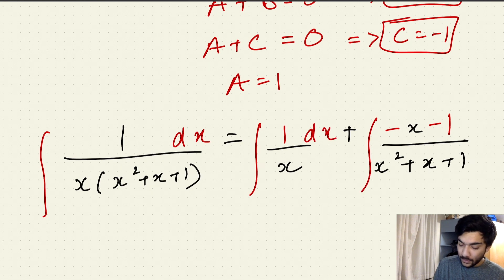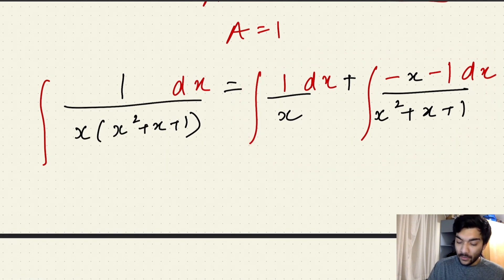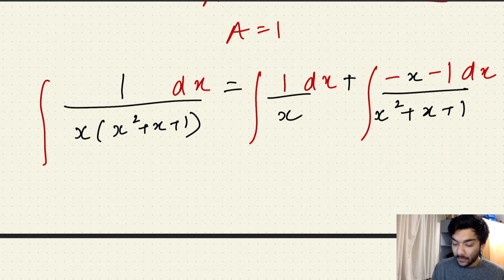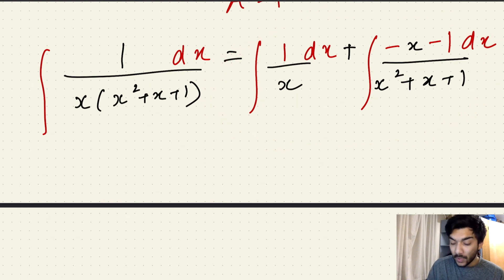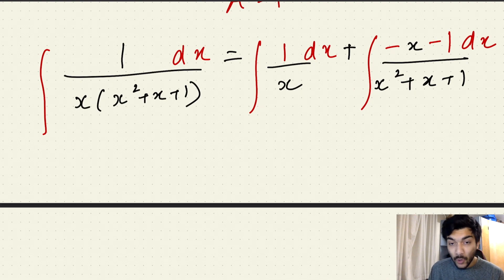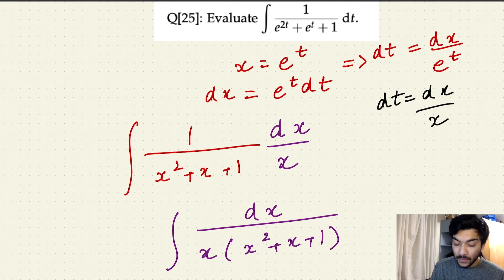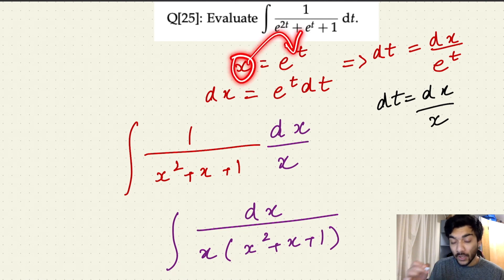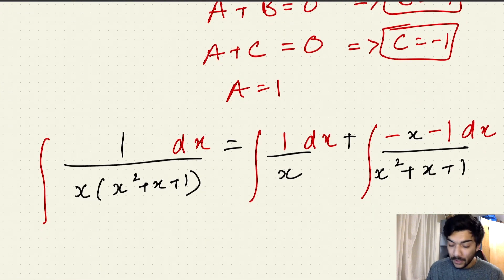Now you can calculate the integral of this expression, which splits into the integral of the first term plus the integral of the second term. The first integral gives the natural log of x, and you can use substitution to solve the second integral. I'll leave the integral calculations to you. Remember to add the constant of integration since this is an indefinite integral, and convert your final answer back from x to t using the substitution x equals e to the power t.